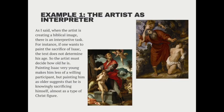Here are some examples. If you want to paint, for instance, the sacrifice of Isaac, the text doesn't determine how old Isaac is — he's a lad, and we don't know exactly what that means. You could paint him young, which means he's going to be less of a willing participant, or you could paint him as a man, in which case he becomes almost a type of Christ figure. This is what the artist must do in bringing the text to life through the image.